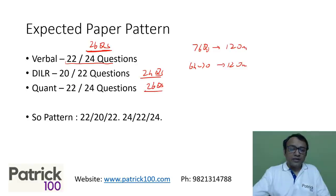Okay, so paper pattern, this is the paper pattern as expected. The first section is normally verbal, DILR and the quant section. Either this or this, whichever paper pattern is there.